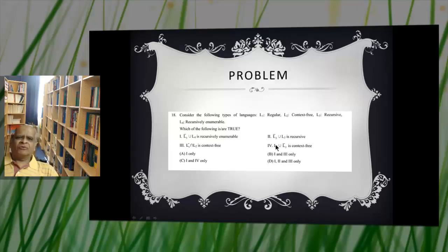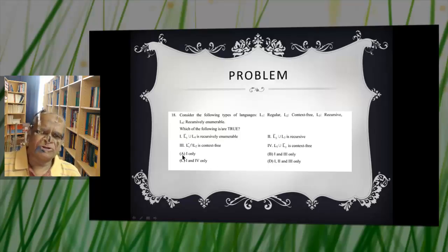Four statements are given. First statement deals with L3 which is recursive and L4 is recursively enumerable. Two deals with L2 context-free and L3 is recursive. Three deals with L1 which is a regular set and L2 which is context-free. Four deals with L1 which is regular and L2 which is context-free. The four choices are A, B, C, D.